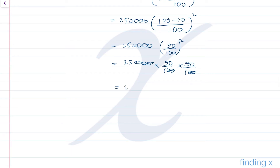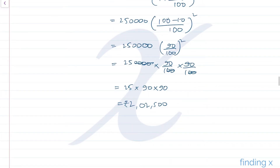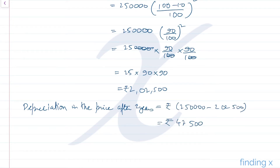Continuing: 25 × 90 × 90 = 25 × 8100 = ₹2,02,500. Wait — simplifying 2,50,000 × (90/100)^2 gives ₹2,02,500. The depreciation amount is ₹2,50,000 − ₹2,02,500 = ₹47,500.